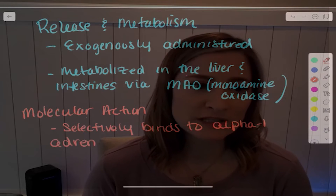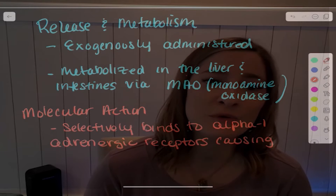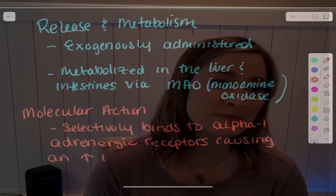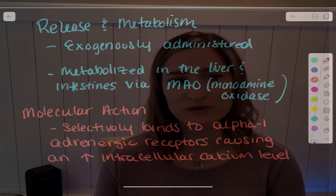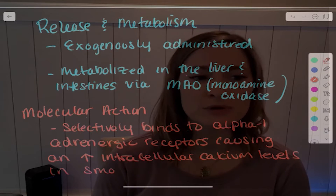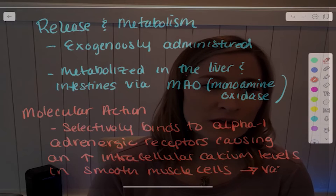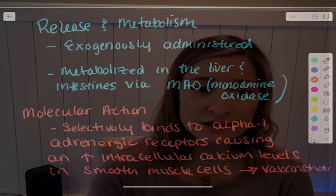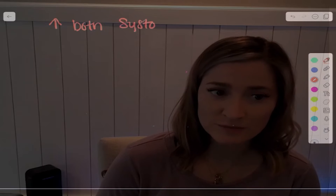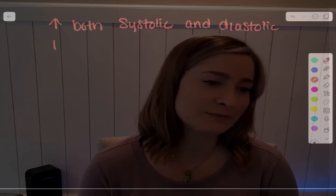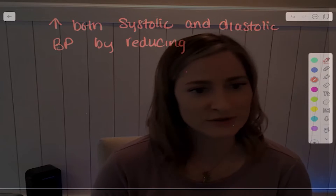On the molecular level, phenylephrine binds selectively to the alpha-1 adrenergic receptor, causing an increase in intracellular calcium levels in smooth muscles leading to vasoconstriction. It increases both systolic and diastolic blood pressure by reducing vascular diameter.